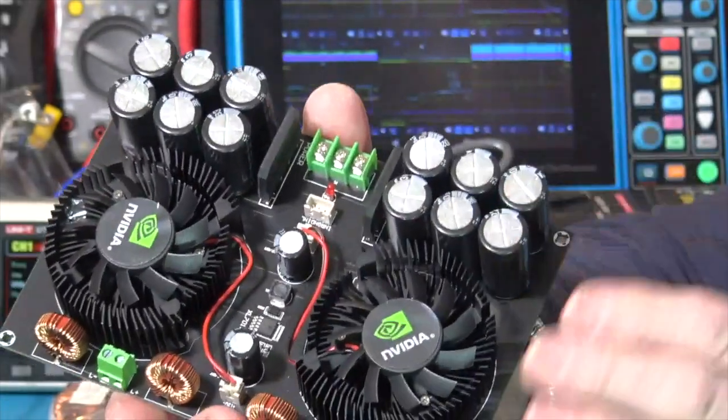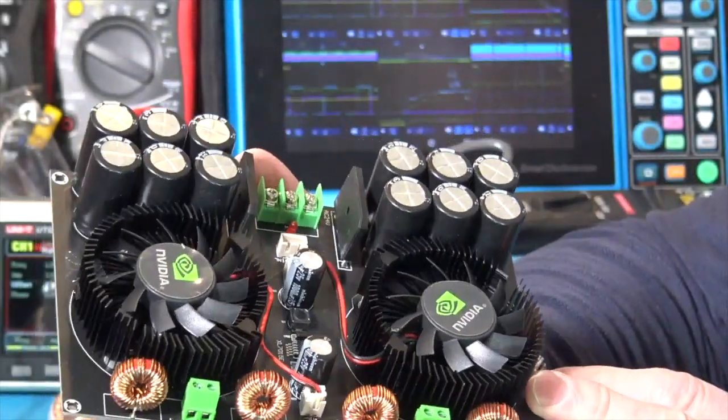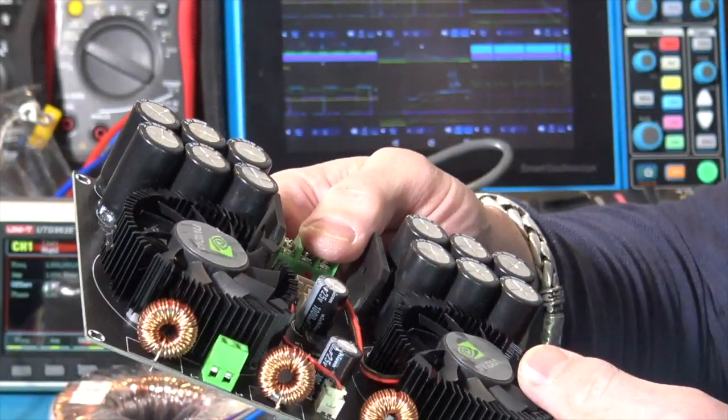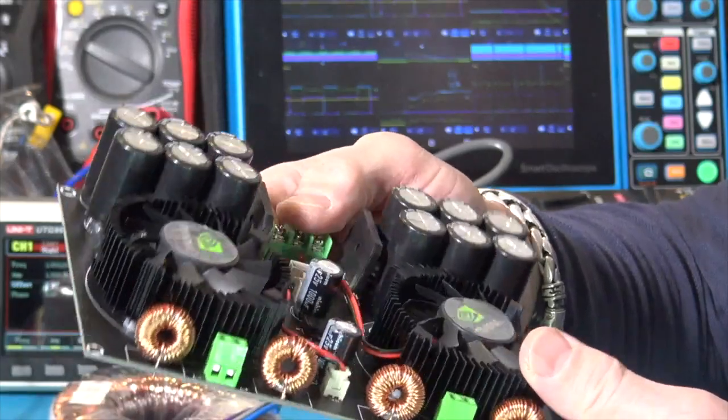So, yeah, quite a bit of capacitance, I think. And these bridge rectifiers are large, too. So, 420 watts, we'll see. I mean, that's a lot of power.